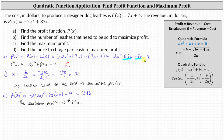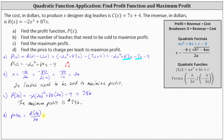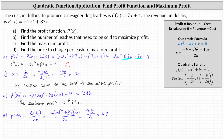For part d, we're asked to find the price to charge per leash to maximize profit. To determine the price, we find the total revenue when 20 leashes are sold and divide by 20. The price equals r of 20 divided by 20. R of 20 equals negative 2 times the square of 20 plus 87 times 20, which equals 940. Dividing by 20 gives 47. The price per leash should be $47 to maximize profit.